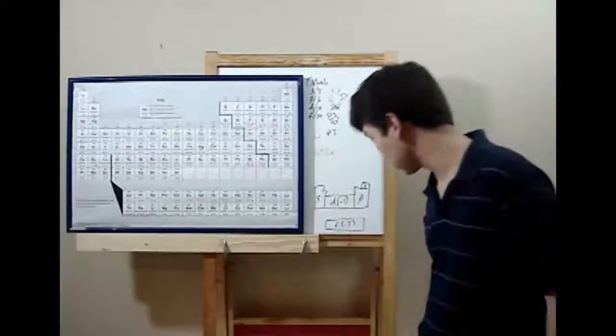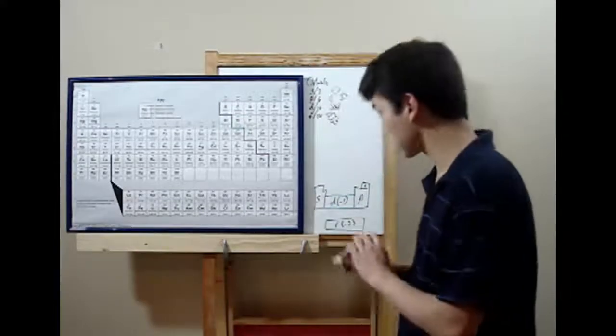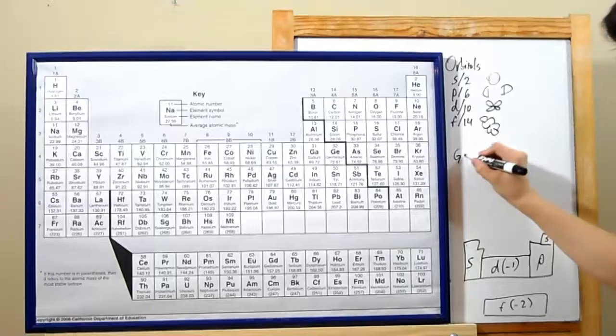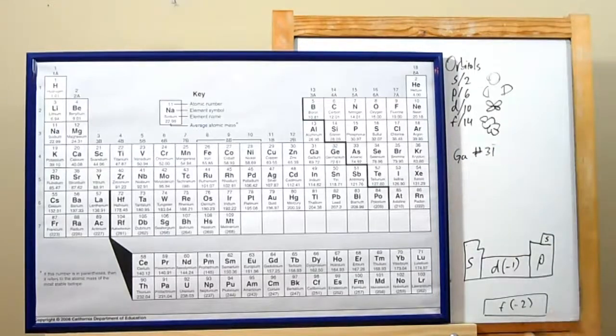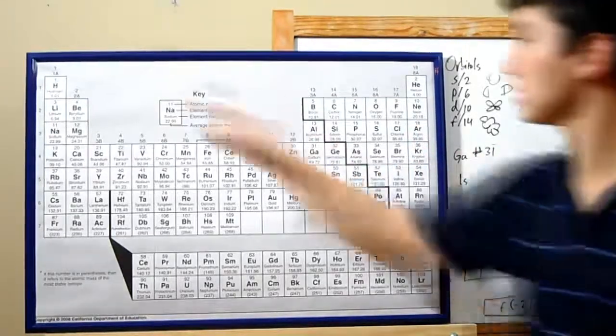Let's do something a bit larger. Let's say we're working with gallium. Gallium's atomic number 31. Let's start out with hydrogen again. 1s 1, 2.